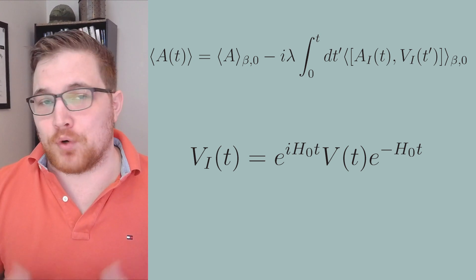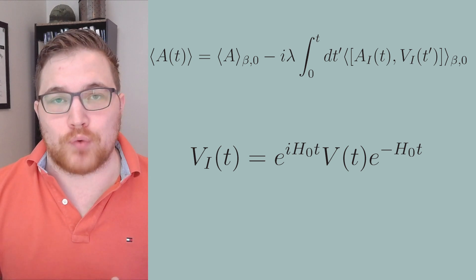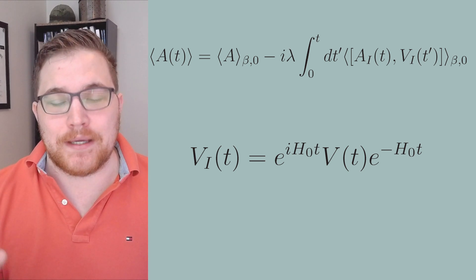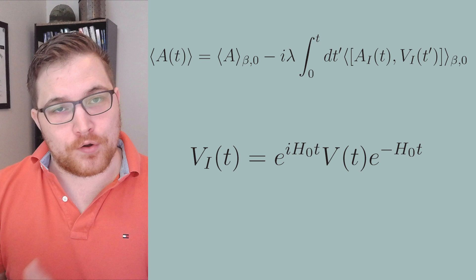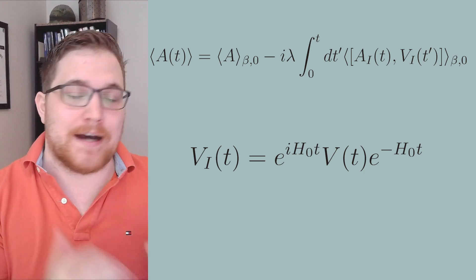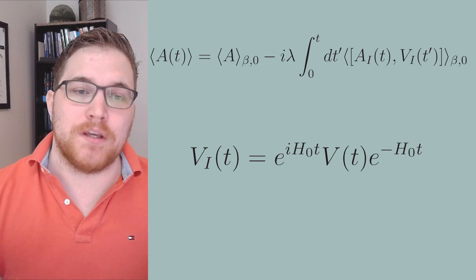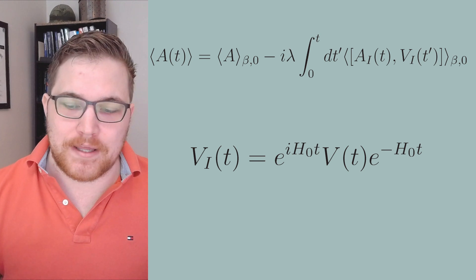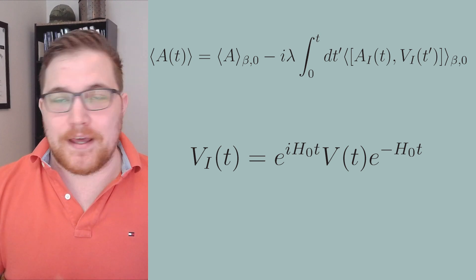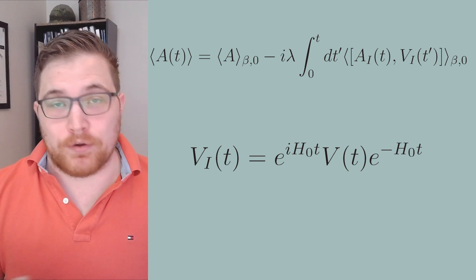If we were being a little bit more relaxed with our notation, we could drop the subscript i and just assume that the thermal expectation value and the time evolution are all being performed by the free Hamiltonian. This formula turns out to be extremely useful.